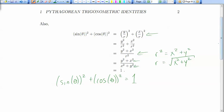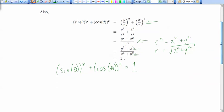We always get 1 when we add up the sum of those squares. And we call this the Pythagorean identity because it comes from the Pythagorean theorem.